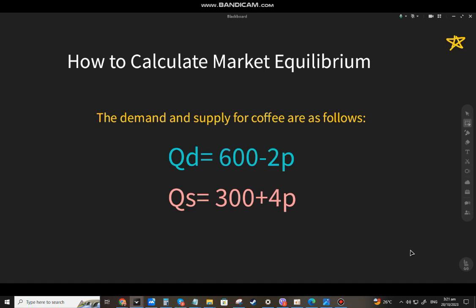Welcome back to my channel Math in Language, and we're going to discuss how to calculate market equilibrium. The demand and supply for coffee are as follows: Qd equals 600 minus 2p, and Qs equals 300 plus 4p.